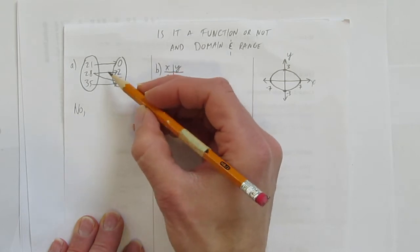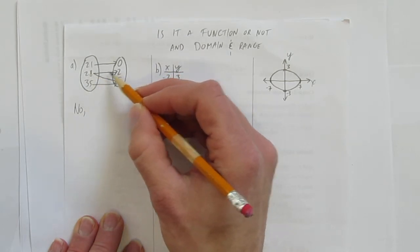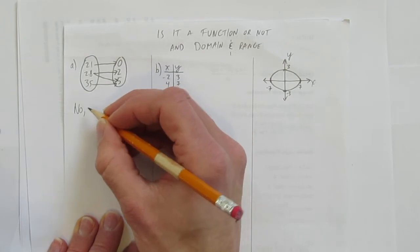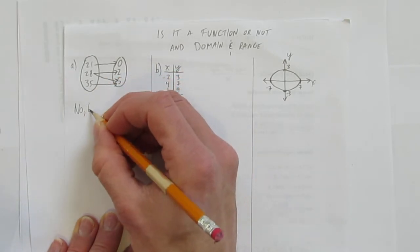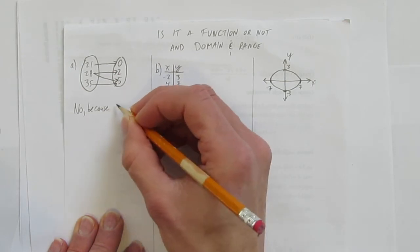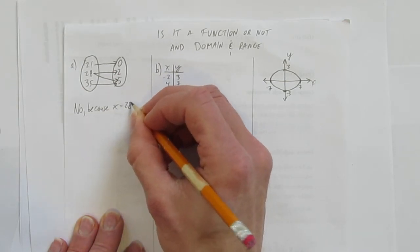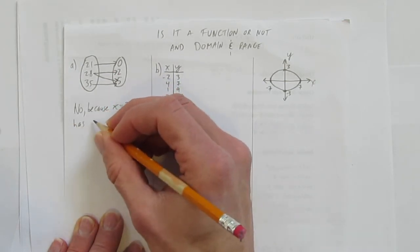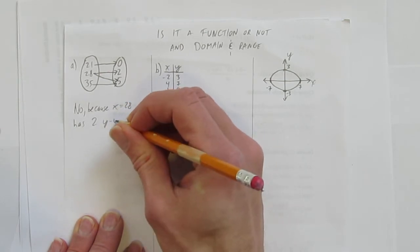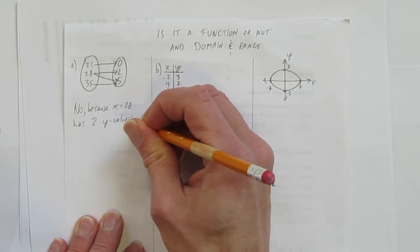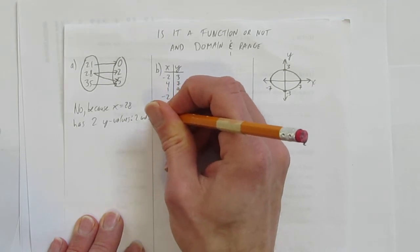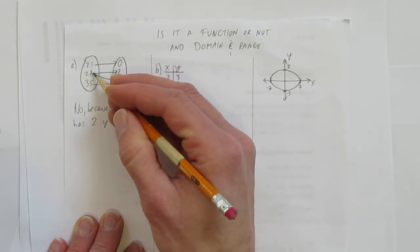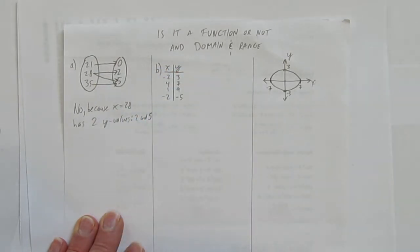What makes this not a function is this 28 having two outputs, or two y values. It's not a function, not because of these double 5s, but because 28, or x equals 28, has two possible outputs, two y values. When you have two y values for one x, that makes it not a function by definition.